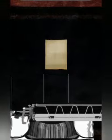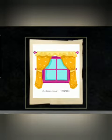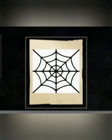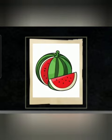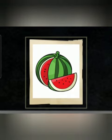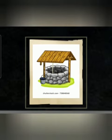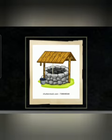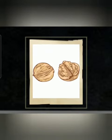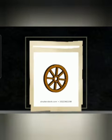Let's start and learn some new words with W sound. Wall. Next is window. Window. Next is web. Web. Next is watermelon. Watermelon. Next is waffle. Waffle. Next is well. Well. Next is walnut. Walnut. Next is wheel. Wheel.